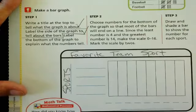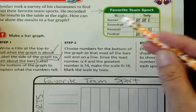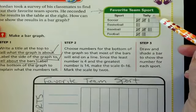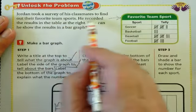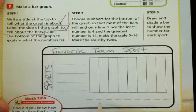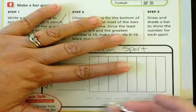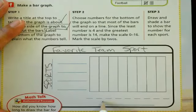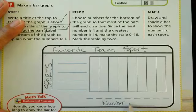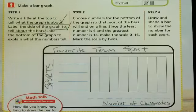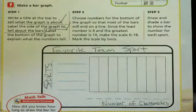Label the bottom of the graph to explain what the numbers tell. So what are these numbers telling? Well, that's how many people like that sport. Because it said over here, he surveyed his classmates to find out their favorite team sports. So this might say, sorry, my brain kind of went dead. We're going to say number of classmates. Because that's what our graph is showing us is the number of classmates that like these sports. All right. We have done that.